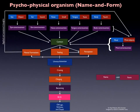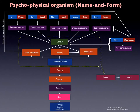Now let's talk about another very important concept called the Psychophysical Organism, or Nama Ropa in Pali, translated as name and form. Name consists of five things: contact, mental formations, feeling, perception and attention — in Pali: Pasa, Vedana, Sanya, Chetana and Manasikarya.